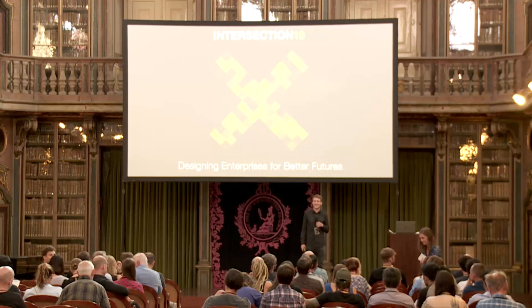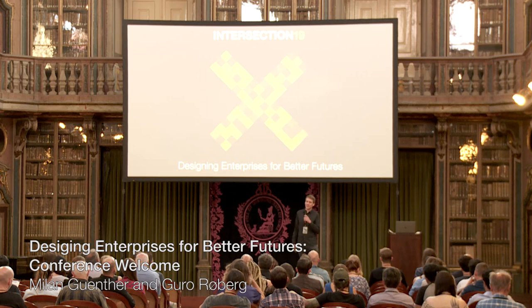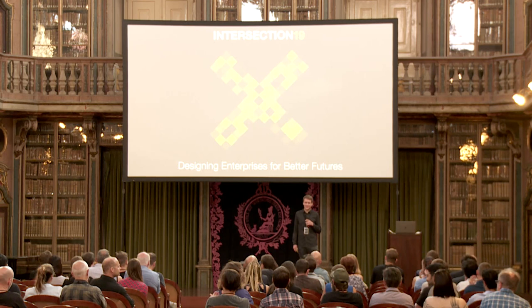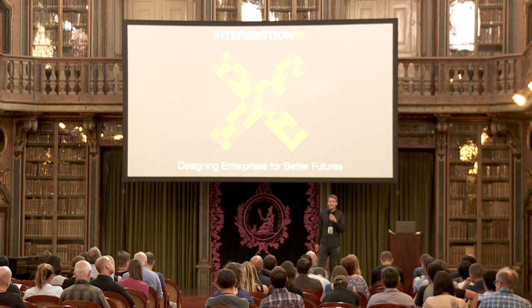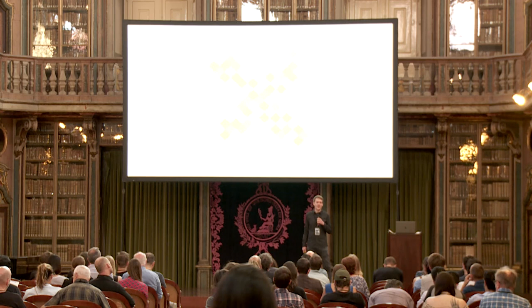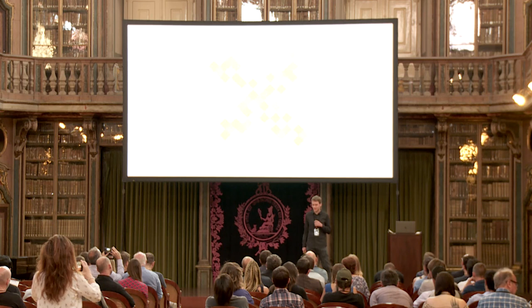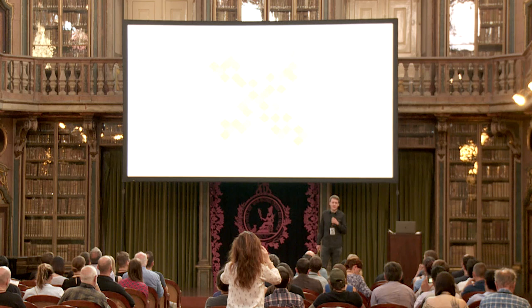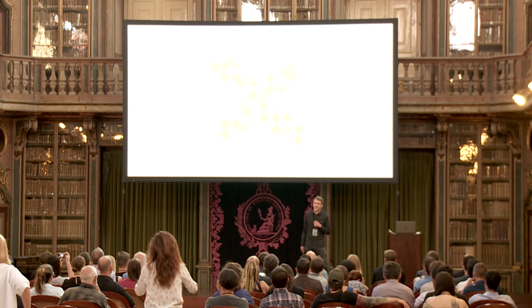Hello. Welcome to the sixth Intersection Conference. Our topic this year is designing enterprises for better futures. I wanted to talk a little bit about why we chose that and what we mean. I pulled up this very old definition of an enterprise from John Maynard Keynes from 1936, where he defines it as the animal spirit of the entrepreneur.